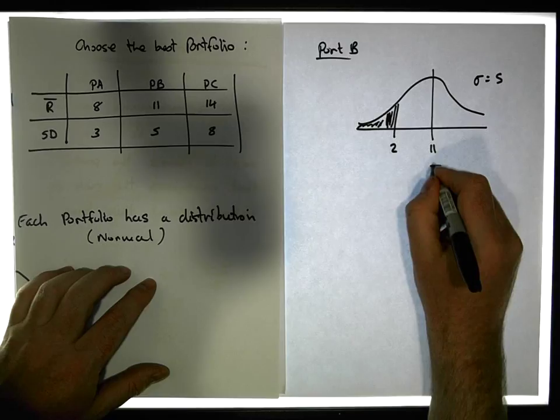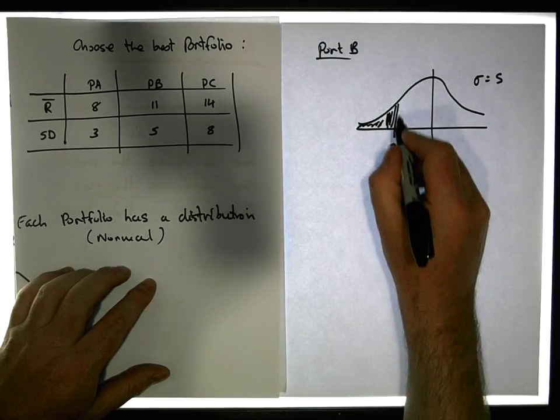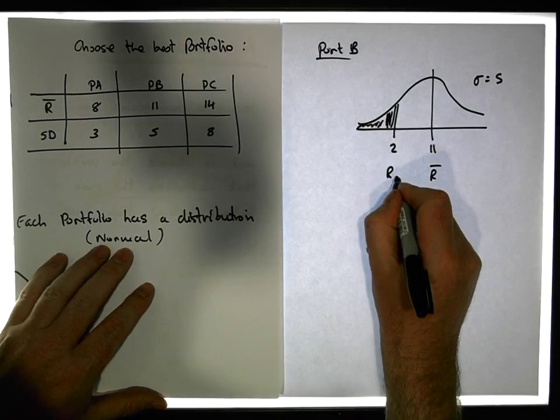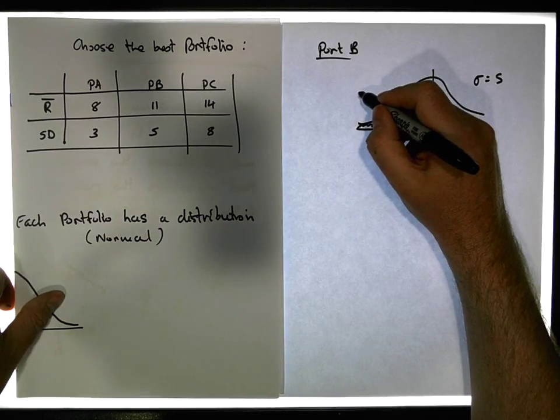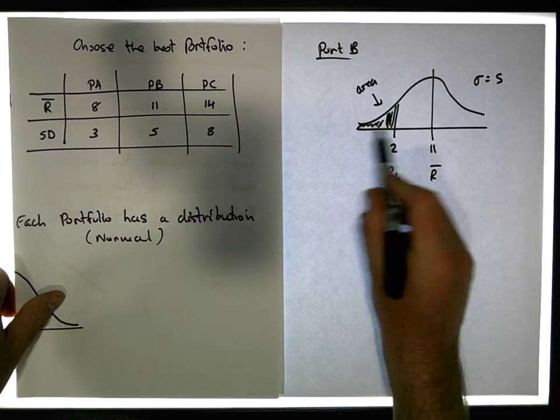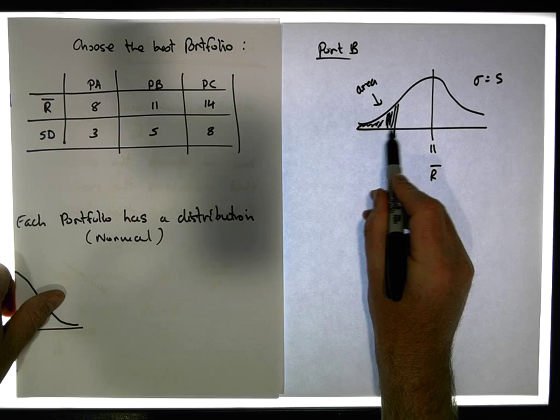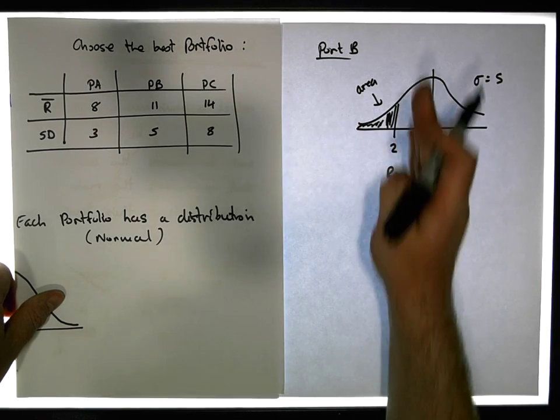So the expected return, this R bar for the portfolio is 11%, and our lower threshold RL is equal to 2% in this case. And we're wondering, what is that area in here?